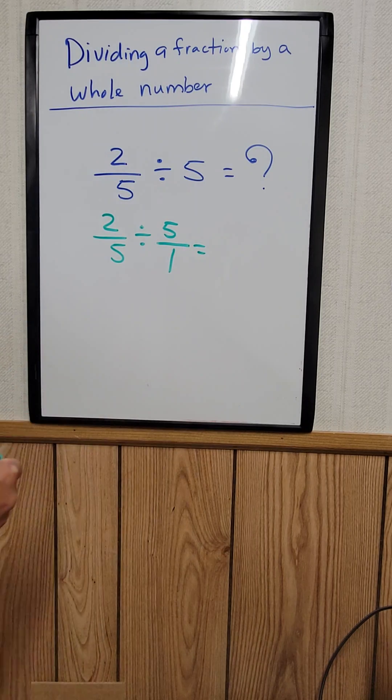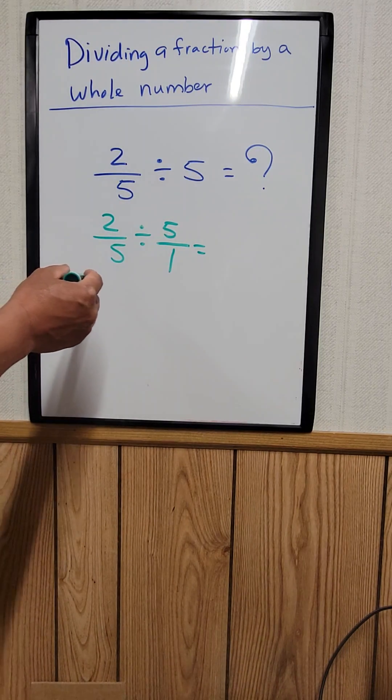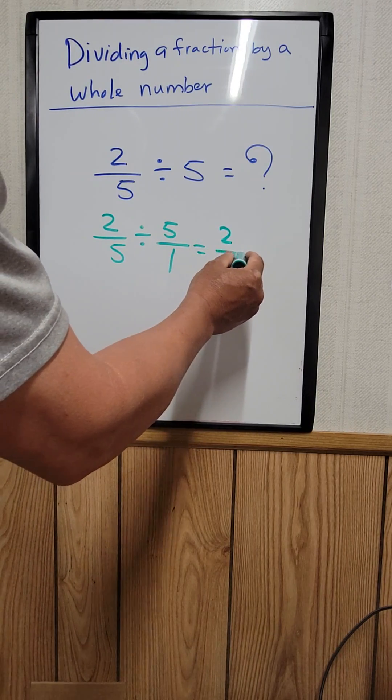And then anytime you divide any number by a fraction, you can do this. So there's 2 over 5.